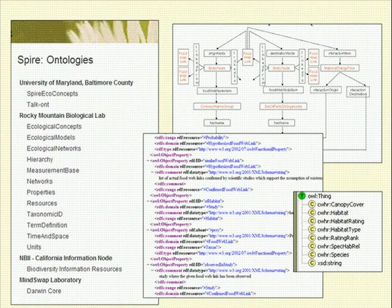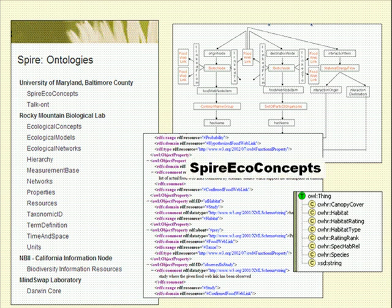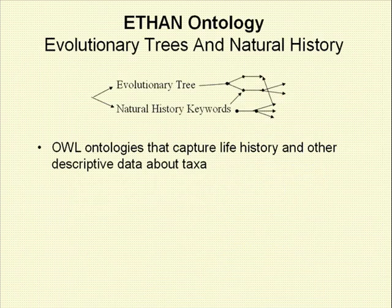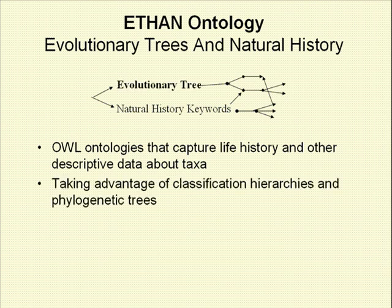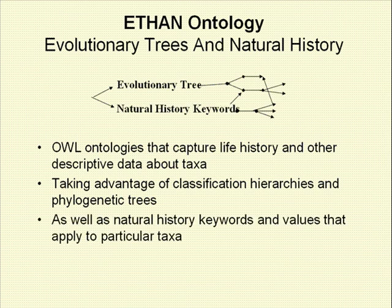To support these algorithms, we are developing a number of ontologies. For example, we have represented all of our food web data and the results of our predictions in fairly simple OWL documents. We are also developing ETHEN, the Evolutionary Trees and Natural History Ontology. Our prediction algorithms will eventually use not just previously known food web links and known evolutionary relationships, but also life history and other characteristics of organisms and their relatives.